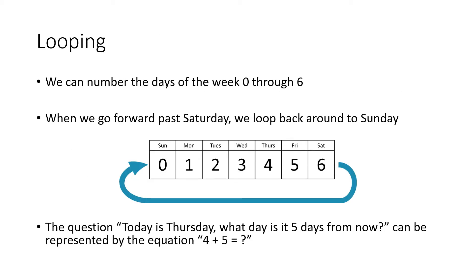So let's number the days of the week 0 through 6. I sort of arbitrarily decided this. There's no real reason why we have to number them this way, but this is just one way to do it. So Sunday is going to be 0, so that means Monday would be 1, Tuesday would be 2, and so on, all the way up to Saturday, which is 6. And if we go up beyond Saturday, we loop back around to Sunday. So if I ask the question, today is Thursday, what day of the week is it 5 days from now? We can represent that with the equation, what's 4 plus 5? Because if today is Thursday, and I want to go five days in the future, I'm adding 5 to 4, and I want to know where I end up.